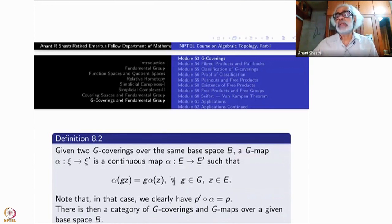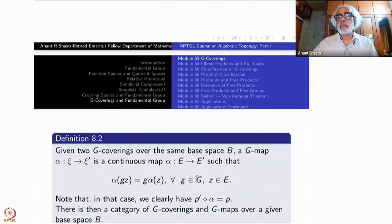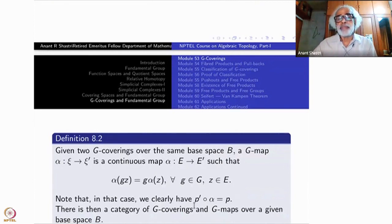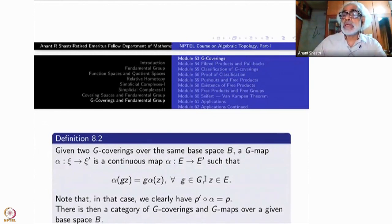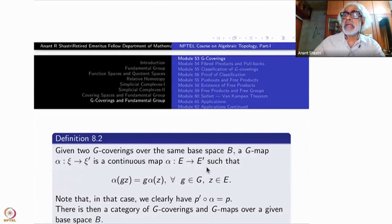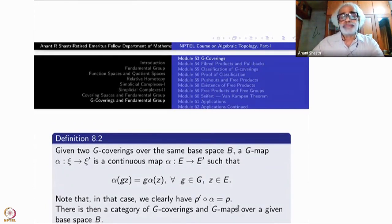This should happen for every g in G and z in E. Such a thing will be called a G-map. Once it is a G-map, it automatically happens that P' composite α equals P. Why? Because both P and P' are quotients — they take equivalence classes by the G-action to the same element. So automatically, if α respects G, then P' will hold on both sides.